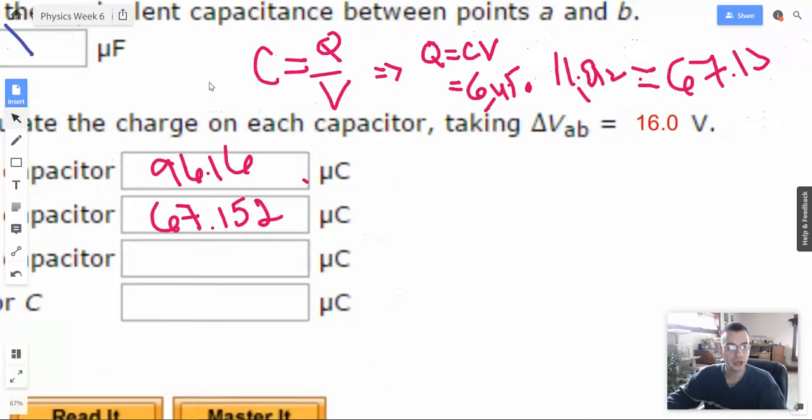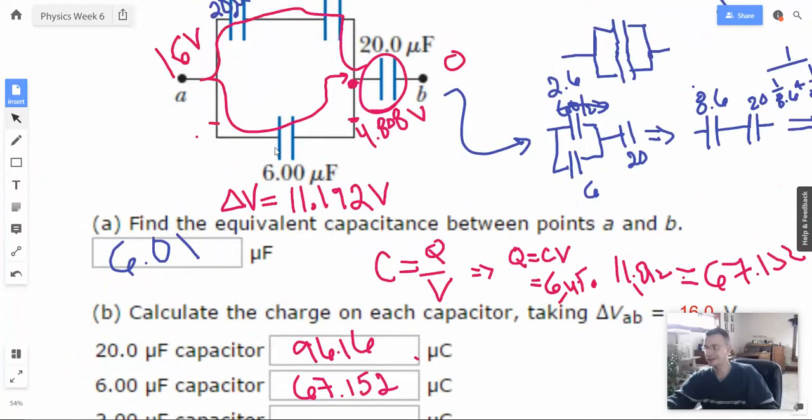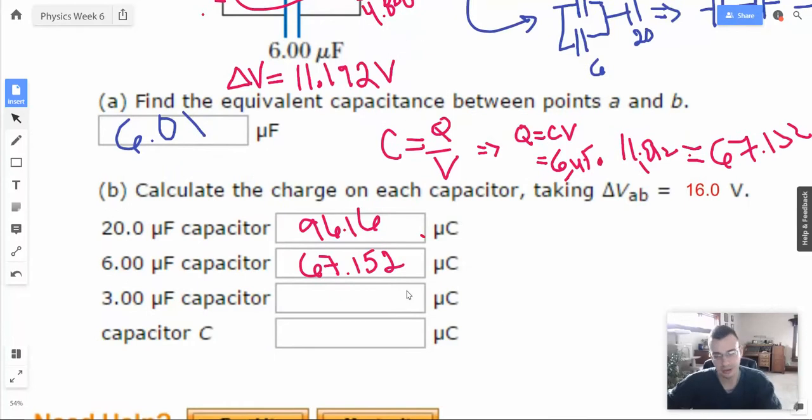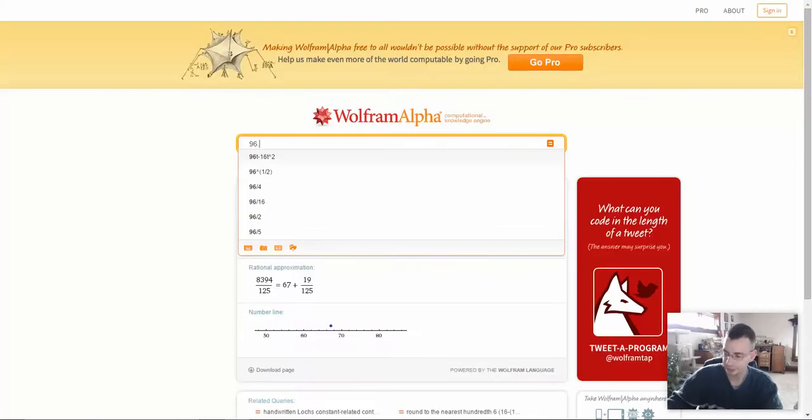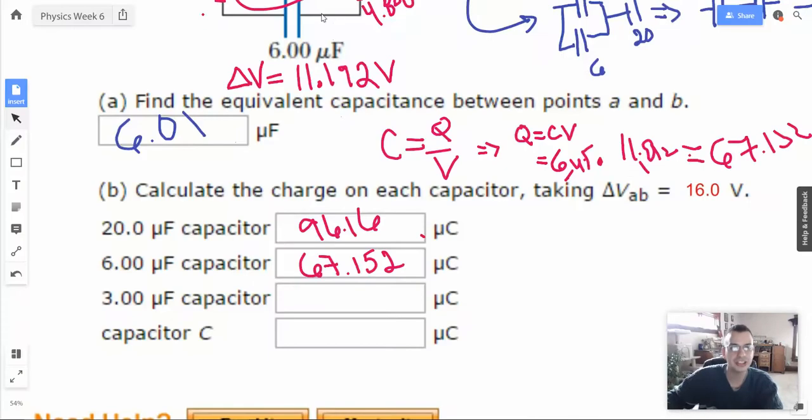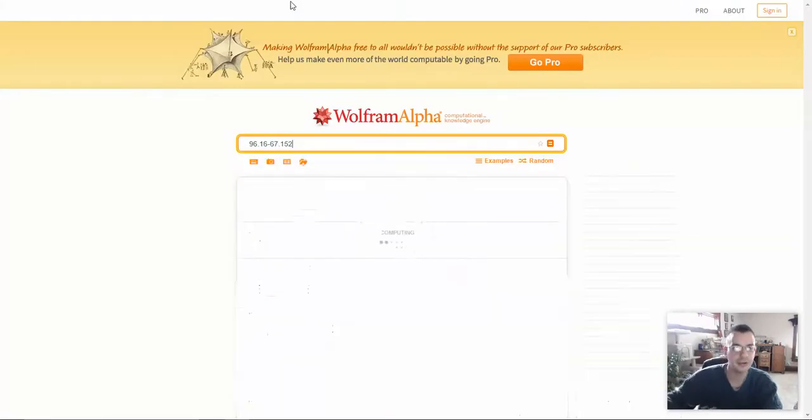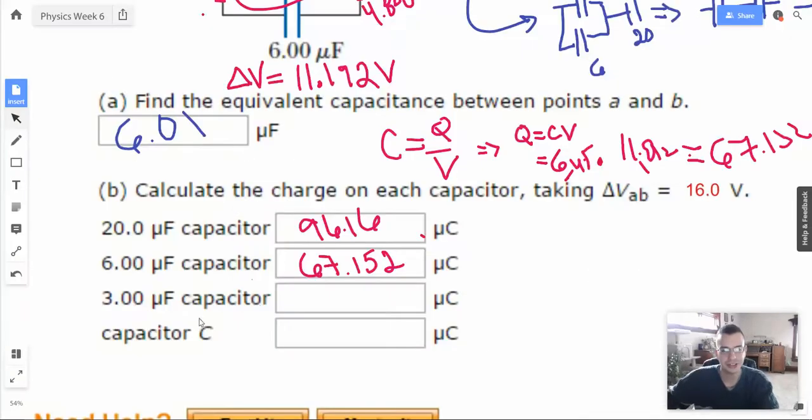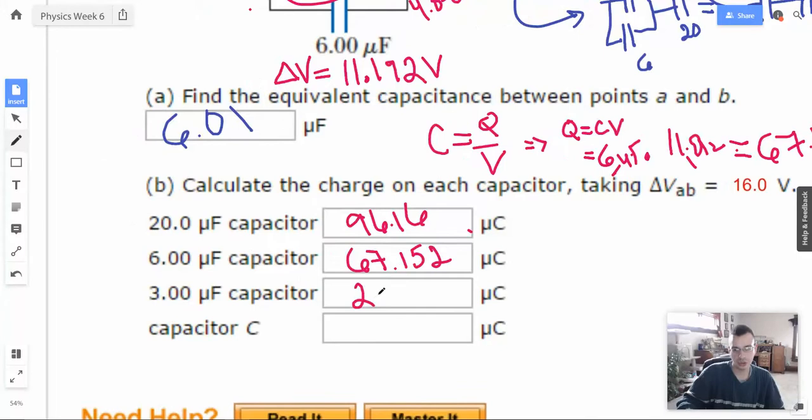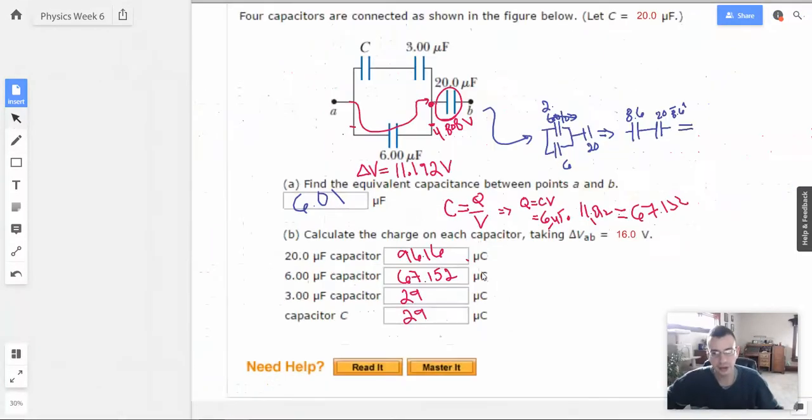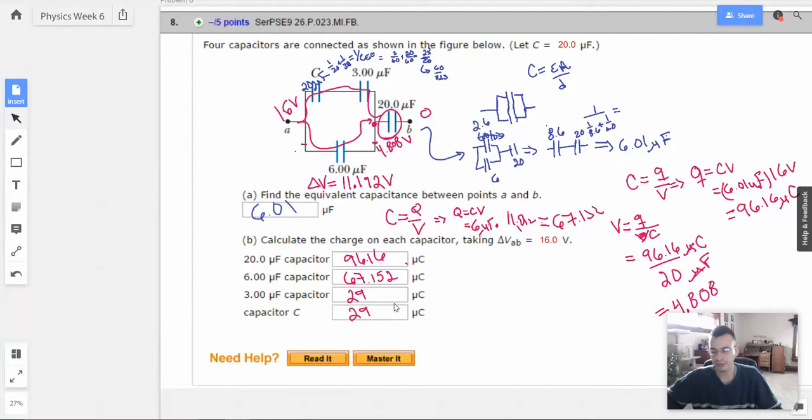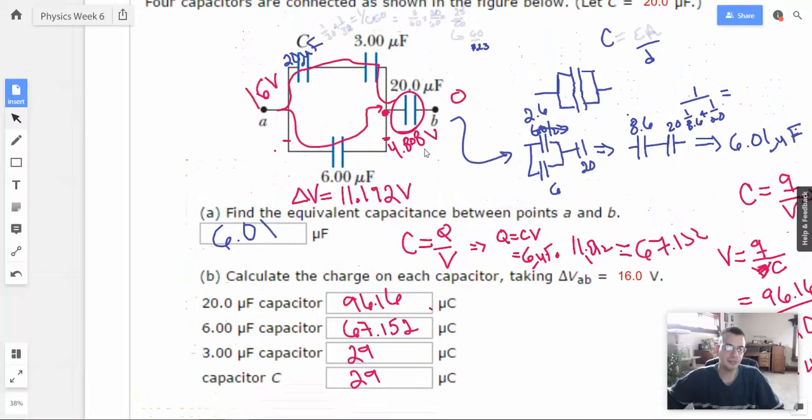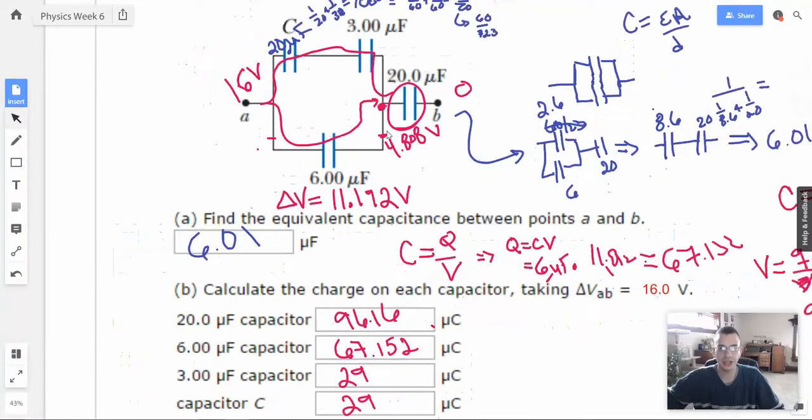So now we know that tells us the charge on the bottom, which means whatever's left is going to take the high road. So whatever didn't take the low road is going to take the high road. 96.16 minus 67.152 equals 29.008 microcoulombs. So that's everything they're asking for. And we even kind of went in order of what they did, which means I probably did it the way they wanted.